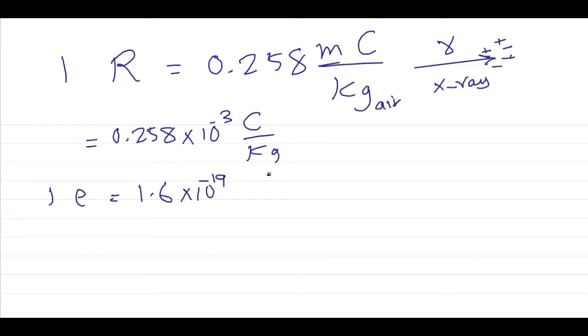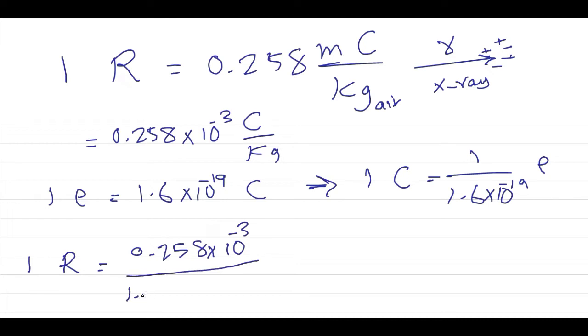So one coulomb equals 1 over 1.6 times 10 to the minus 19 electrons. Now we substitute this into the equation for Röntgen. We get 1 Röntgen equals 0.258 times 10 to the minus 3 divided by 1.6 times 10 to the minus 19 electron per kilogram.